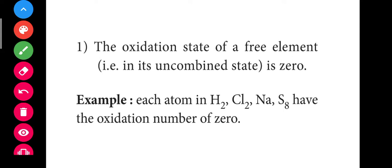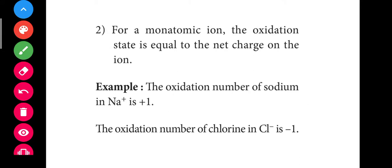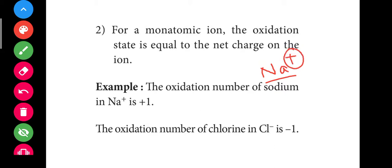The second rule: for a monoatomic ion, the oxidation state is equal to the net charge. A monoatomic ion is a single atom that carries a charge. For example, Na+ is a monoatomic ion with a plus charge, and Cl− is a monoatomic ion with a minus charge — either plus or minus, it is an ion.